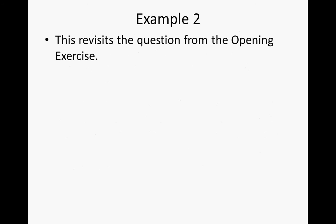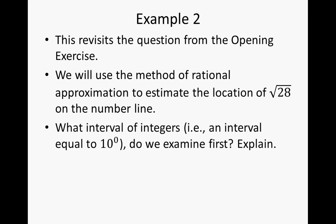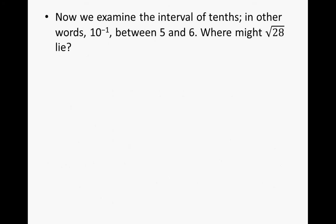Example 2 revisits the opening exercise. We will use rational approximation to estimate the location of the square root of 28 on the number line. What interval of integers do we examine first? We must examine the interval between 5 and 6, because 5 squared is less than the square root of 28 squared, but that is less than 6 squared — in other words, 25 is less than 28, and 28 is less than 36. Now we examine the interval of tenths, that is, 10 to the negative first power, between 5 and 6.